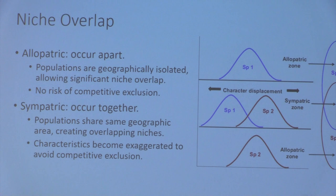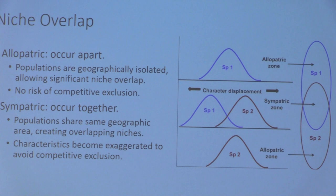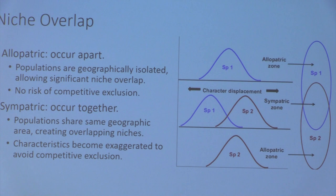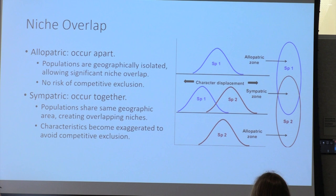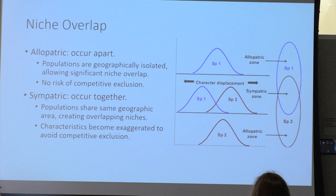Characteristics developed through character displacement are much more exaggerated in sympatric species than in allopatric species. For example, in an allopatric zone a species might have a medium-sized beak, whereas in a sympatric zone you'd have both small and large beaks with minimal overlap — exaggerated to avoid exclusion. In allopatric zones that exaggeration can be reduced because there's no risk of exclusion.